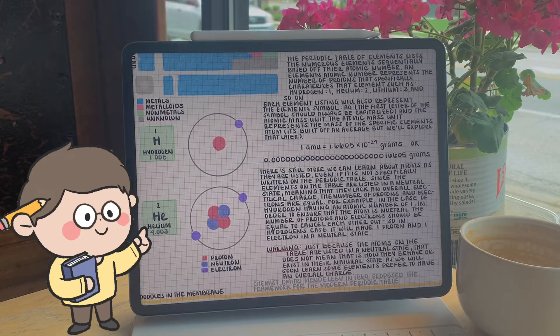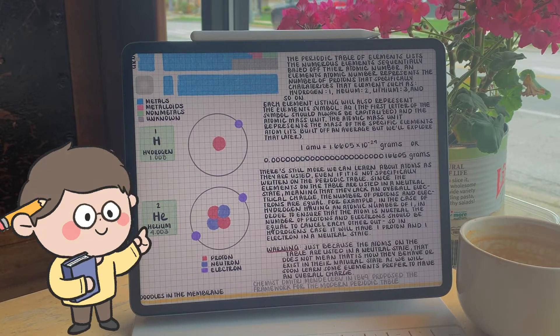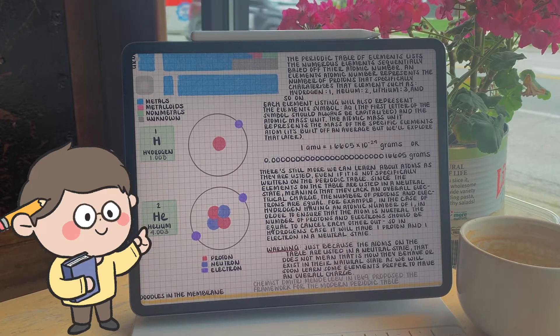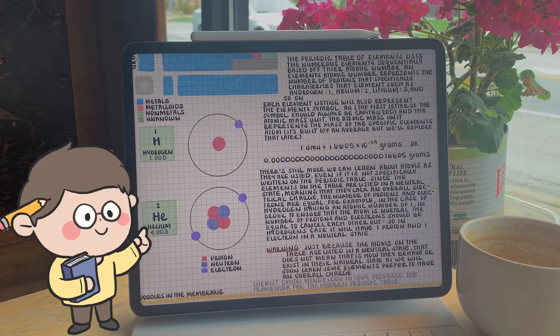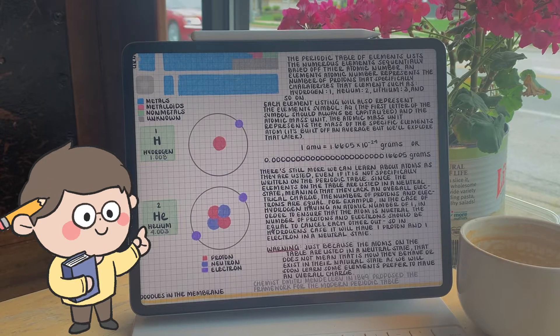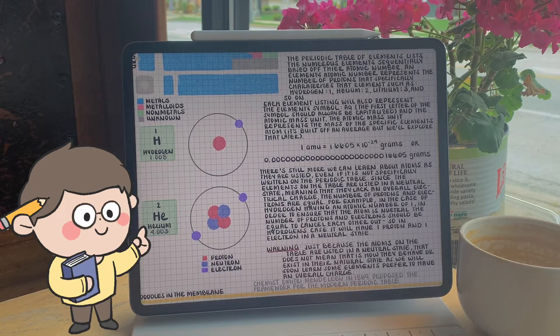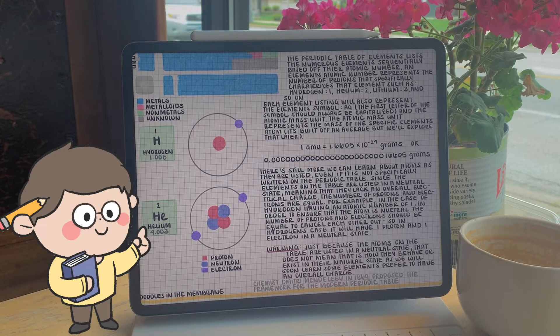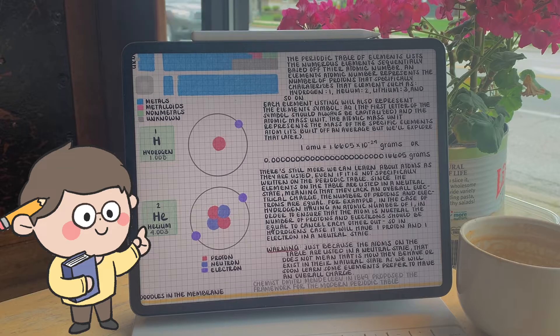For example, in the case of hydrogen having an atomic number of one, in order to ensure that the hydrogen atom is neutral, the number of protons and electrons should be equivalent to cancel out all charges. So in hydrogen's case, as it's listed on the periodic table, we'll have one proton and one electron.